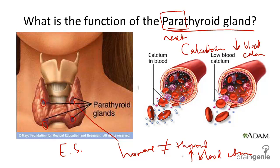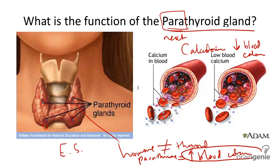When parathyroid hormone, or parathormone, is released, it triggers bone cells to dissolve bone so that calcium may be more available for important body functions, such as blood clotting and muscle contraction.